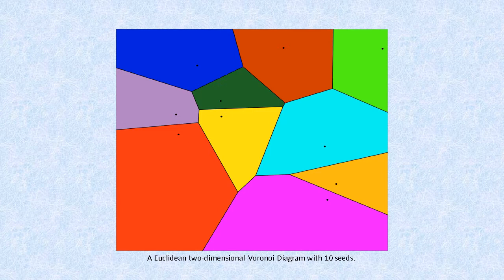For example, all the blue space is closest to the top left seed and all the green space is closest to the top right.